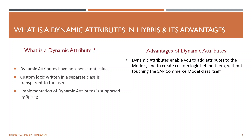A dynamic attribute is an attribute whose values are not persisted into the database — simple as that. Any attribute termed as dynamic, whose persistence property is set to dynamic, will not have any space in a database. The custom logic written for a dynamic attribute is in a separate class and it is transparent to users.